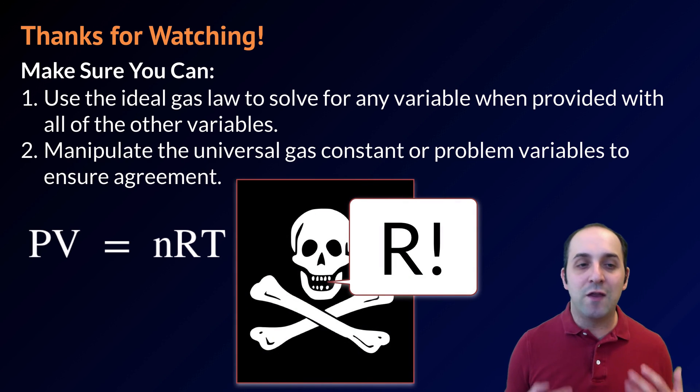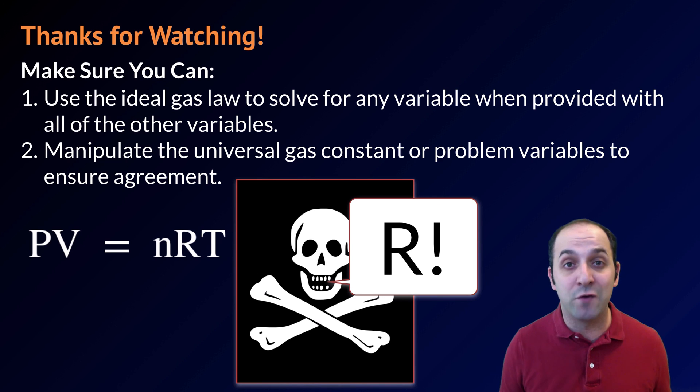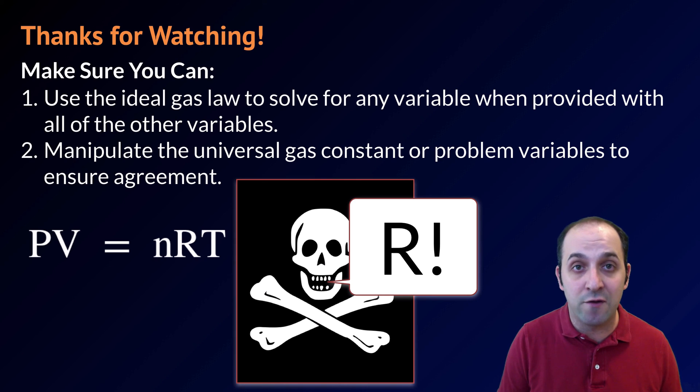Also make sure that you can manipulate the universal gas constant or problem variables to ensure your agreement. So make sure that you can change your R value if you're given your pressure in kilopascals, or make sure you could change your pressure in the problem to something like atmospheres to use the R value that you're given. If you can do those two things, you're doing great. If you have any questions, you can always leave them in the comments below this video, or you can always get in touch with me through the information in the info field. Thanks again for watching. Have a great day.